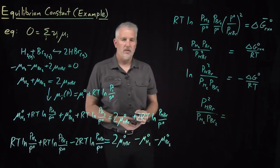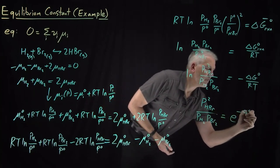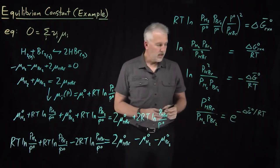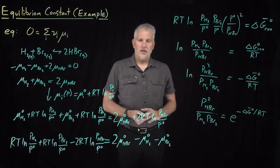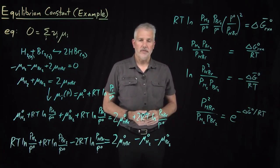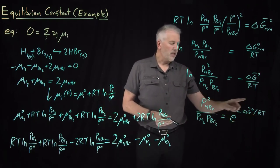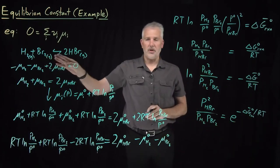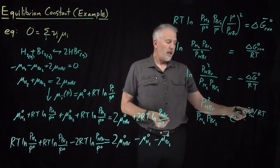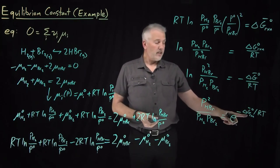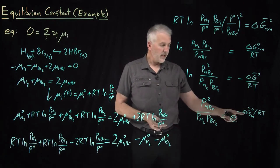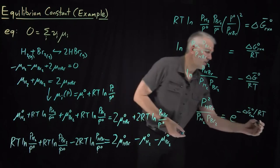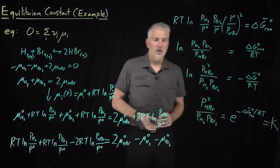When I exponentiate the right-hand side, I get e^(−ΔG°/RT). This should look familiar if you've dealt with equilibrium constants before. This quantity — e^(−ΔG°/RT) — where ΔG° is the free energy for this particular reaction of H₂ and Br₂ forming HBr — at a particular temperature gives a number. That number we call the equilibrium constant.